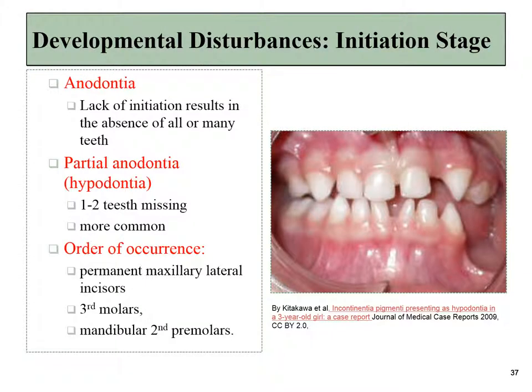This leads to the clinical applications. Anodontia is a defect in the initiation stage resulting in the absence of all or many teeth. If only one or two teeth are missing, it's called hypodontia or partial anodontia. The most commonly missing teeth are the maxillary lateral incisor, followed by the third molar, followed by mandibular second premolars.